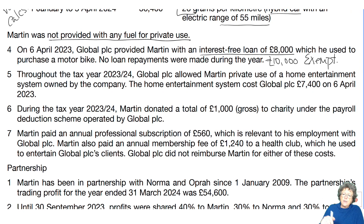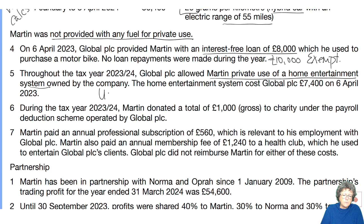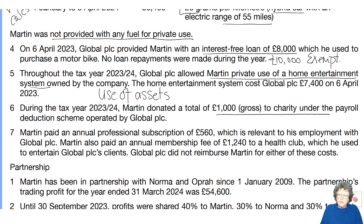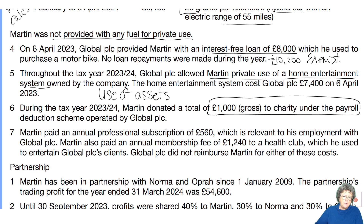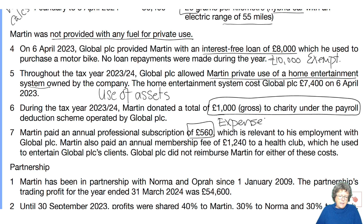They allowed him private use of a home entertainment system — that's use of assets. There's a charity donation under the payroll system, deducted directly from his salary. He paid an annual subscription — that's a necessary expense and allowed. And he's a member of a health club — not going to get that one because it's dual purpose as he's using it privately.